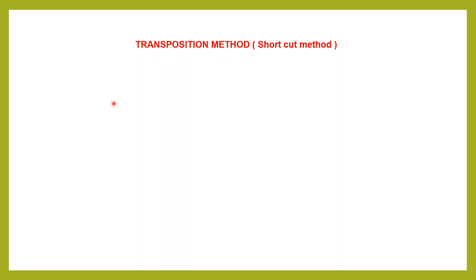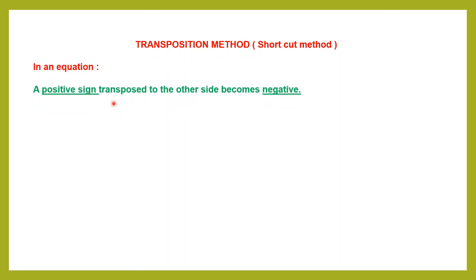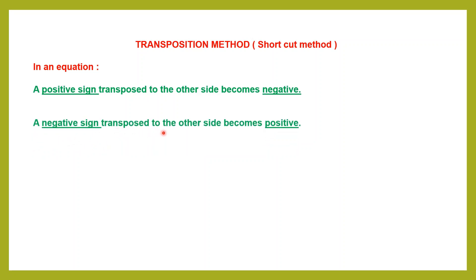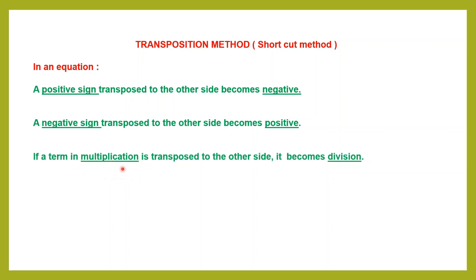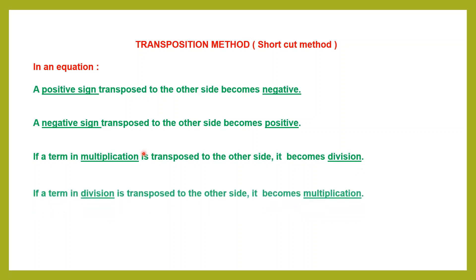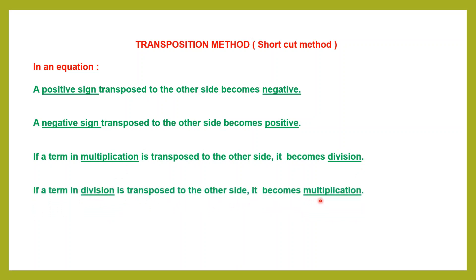In transposing, a positive sign which is transposed to the other side becomes negative. Then a negative sign which is transposed to the other side becomes positive. If a term in multiplication is transposed to the other side, it becomes division. And if a term in division is transposed to the other side, it becomes multiplication. So you have the rules where you add and subtract or multiply and divide the same number on both sides, or you have the transposition method.